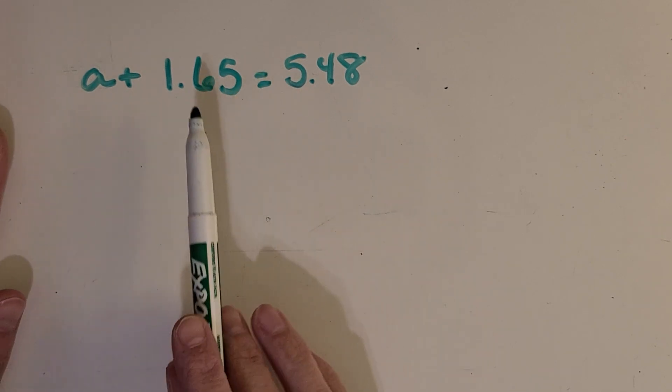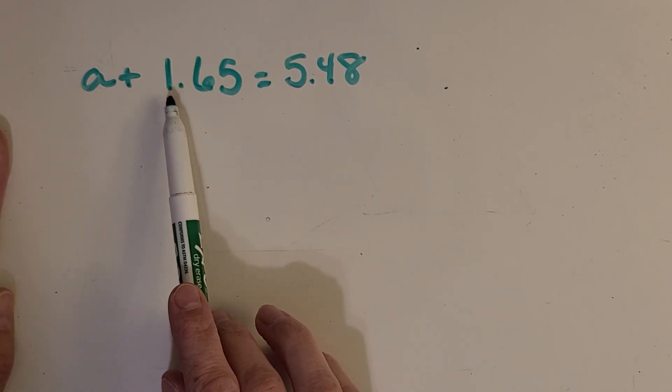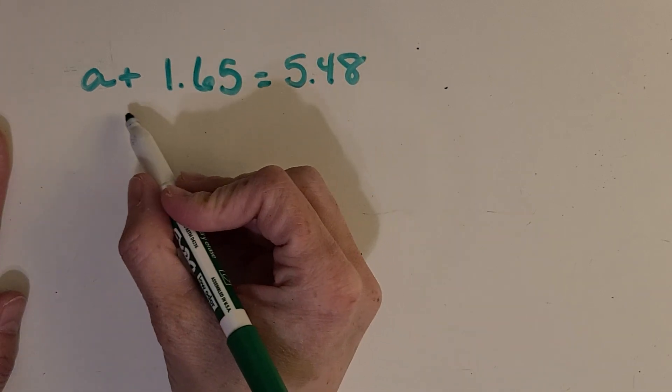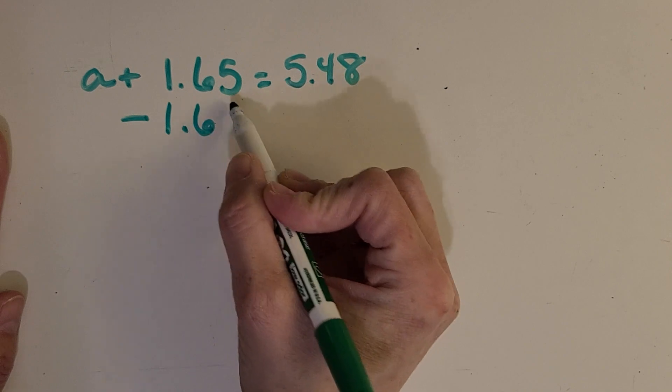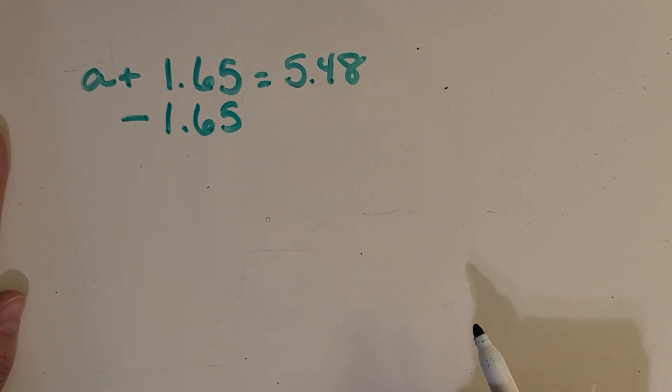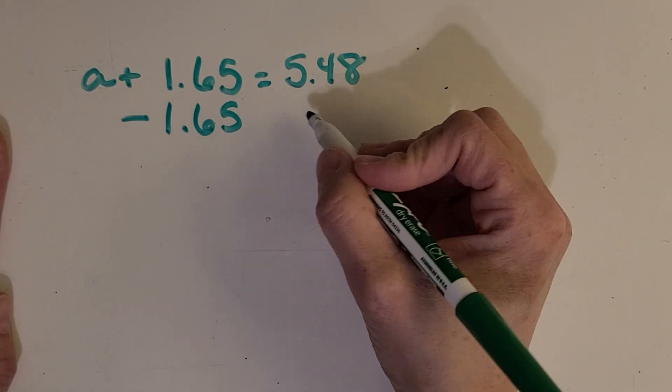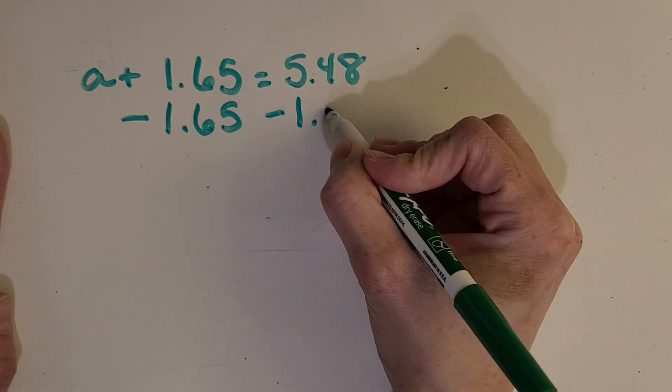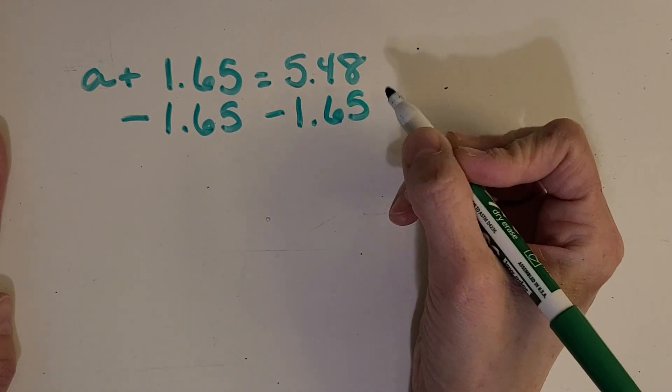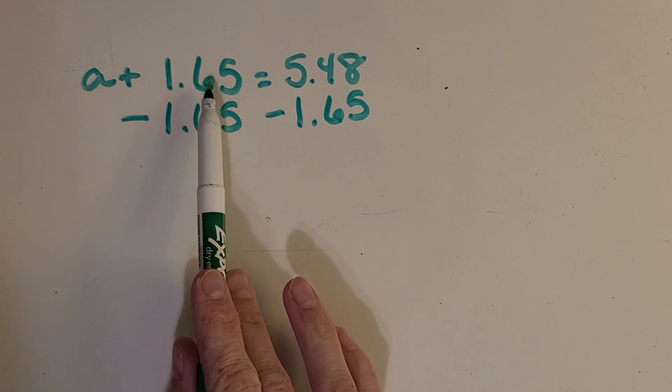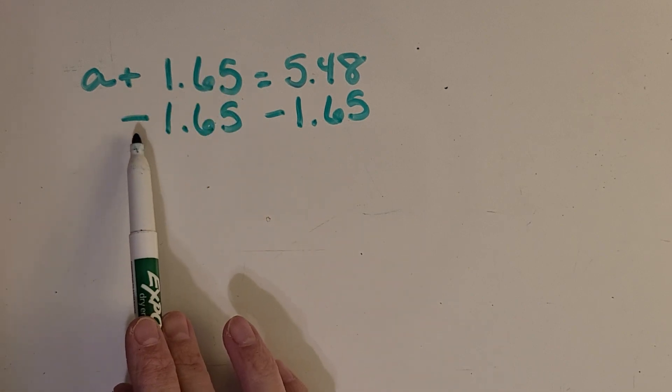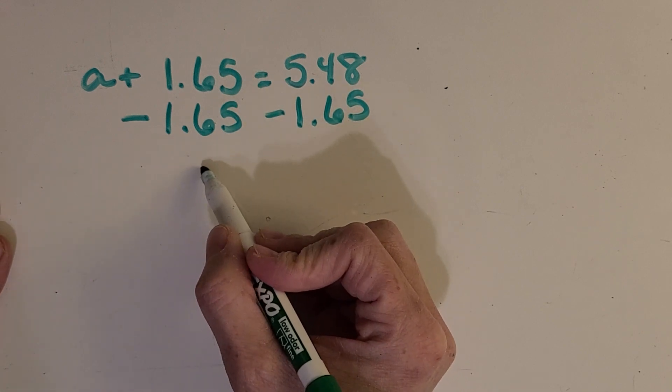So for example, I've got this positive 1.65. So if I do the opposite and I take away that amount, then I also, to make it balanced, need to take that away from the other side. And if I do that, if I've got a positive 1.65 and I go minus 1.65, I just have 0, right?